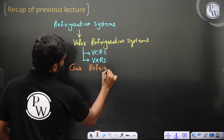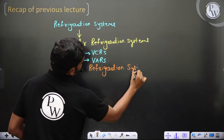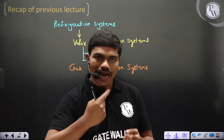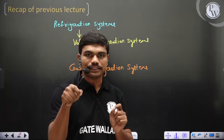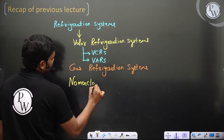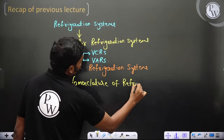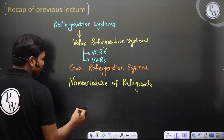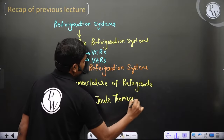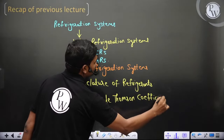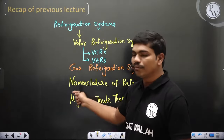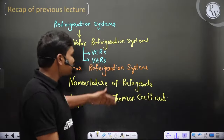We also looked at gas refrigeration systems. In gas refrigeration systems, we saw how to identify the COP. If a Brayton cycle or Bell-Coleman cycle is given, you calculate the thermal efficiency and COP, or apply the formulas directly. For calculating temperatures, we use adiabatic relations. We also saw the nomenclature of refrigerants, and one very important factor: the Joule-Thompson coefficient.